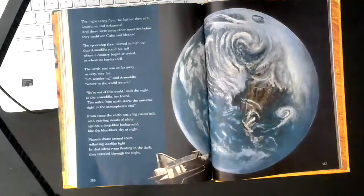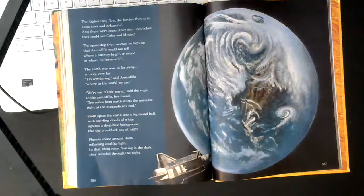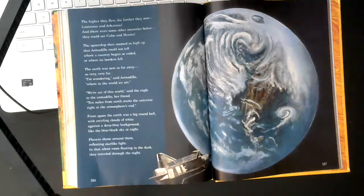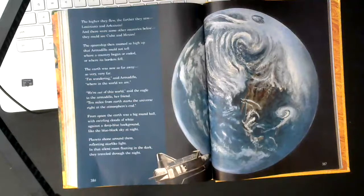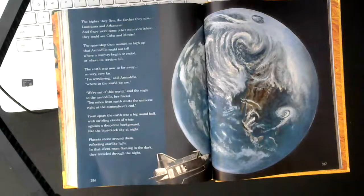The higher they flew, the farther they saw Louisiana and Arkansas, and there were some other countries below. They could even see Cuba and Mexico. The spaceship then zoomed so high up that Armadillo could not tell, where our country began or ended, or where its borders fell.